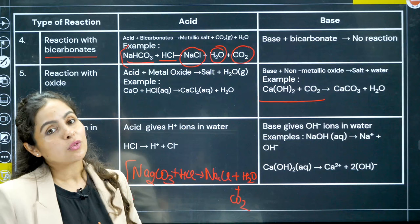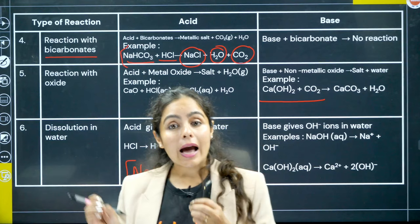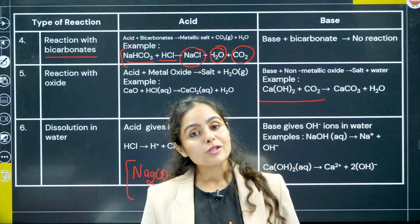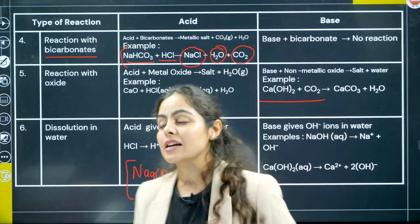Regarding dissolution in water — when we dilute acids or bases in water, they will ionize. Acids produce hydrogen ions which eventually become hydronium ions, while bases produce hydroxide ions, which we also call hydroxyl ions.